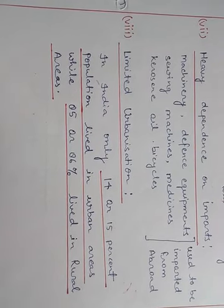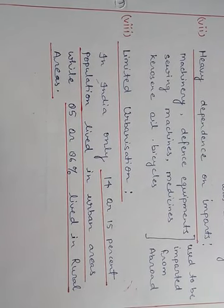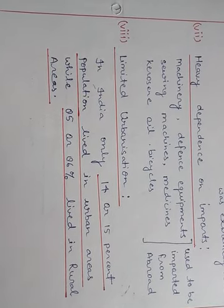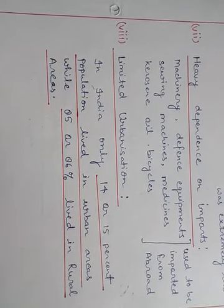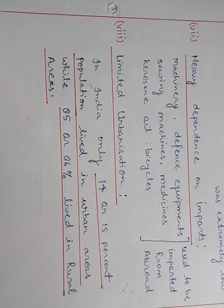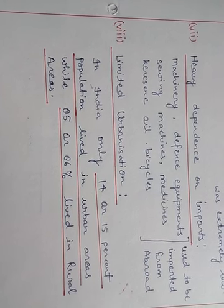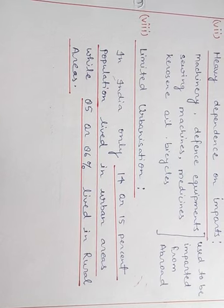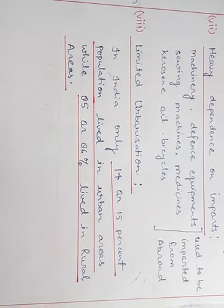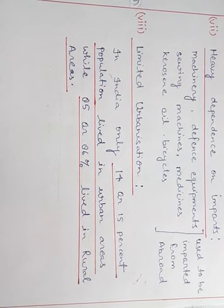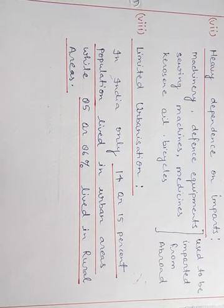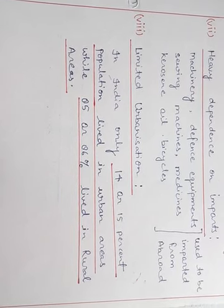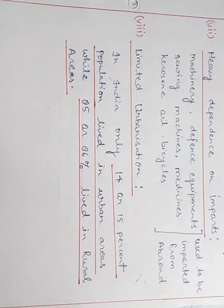Our last topic is limited urbanization. In India, only 14 to 15% of the population lived in urban areas, while 85 to 86% lived in rural areas. We know that people living in cities have easy access to electricity, water, and healthcare, whereas for people living in villages, these are major problems.